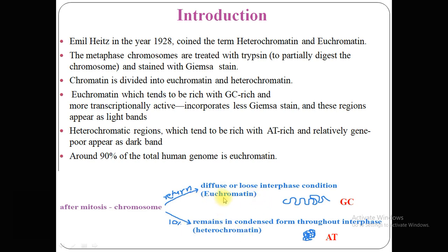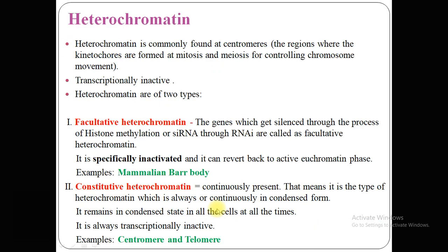As you can see in this diagram, euchromatin incorporates very little Giemsa stain and these regions appear as a light band. This is a GC-rich content region in chromatin, while heterochromatin tends to be rich with AT — adenine-thymine rich — and relatively gene poor, appearing as a dark band. Around 90% of the total human genome is euchromatin.